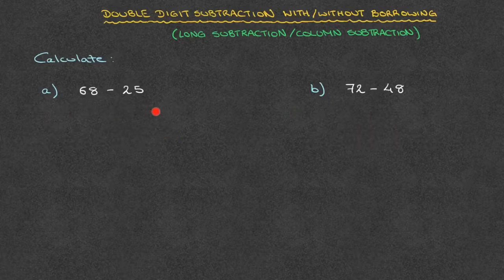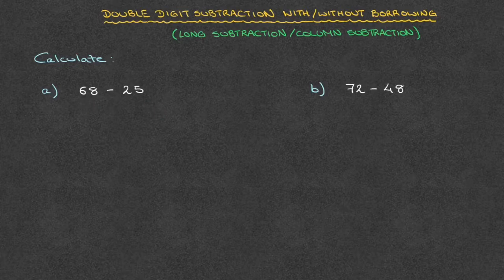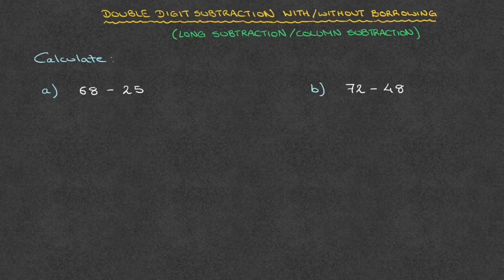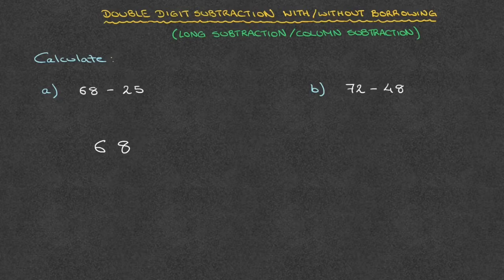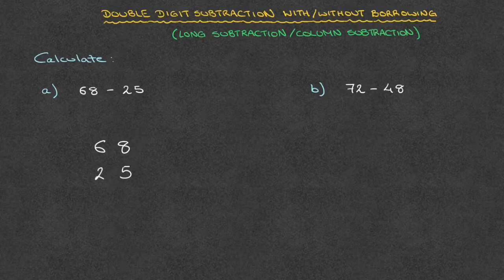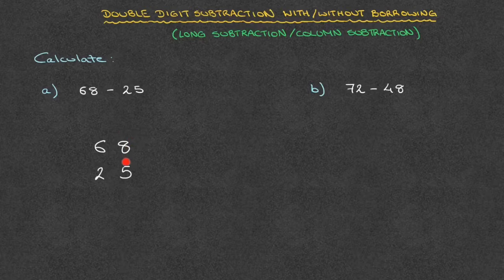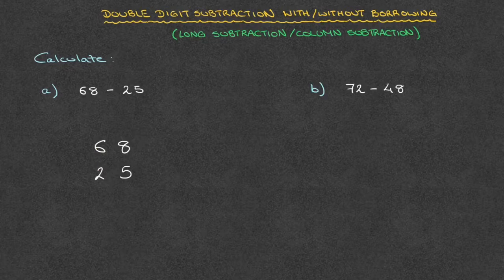For the first example, we need to calculate 68 minus 25. The first thing I do is rewrite this subtraction vertically. I write 68, and directly below that I write 25. Notice that when I do this, I make sure to write the 5 directly beneath the 8 and the 2 directly beneath the 6. That's to make sure that all of the units are vertically aligned, and all of the tens are vertically aligned as well. Because we're subtracting, I write a minus sign right here, and I underline all of that.